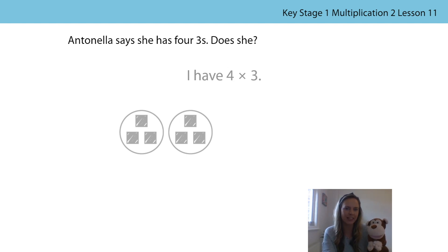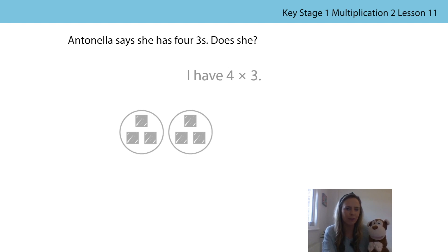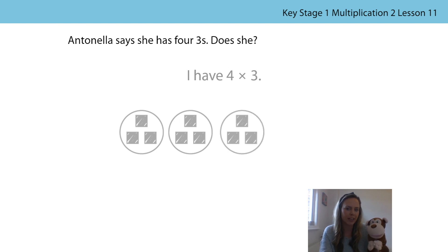Antonella says that she has four threes. Does she? Pause the video and have a think, or chat with somebody at home about whether you agree with Antonella. Bongo and I didn't agree with her. If we look at the picture she's drawn, we can see she's got one three, two threes — she definitely doesn't have four threes. What would we have to do to help her represent four threes? So we draw another group of three — now she's got three threes. And one more group of three — now she's got four threes, or four times three.